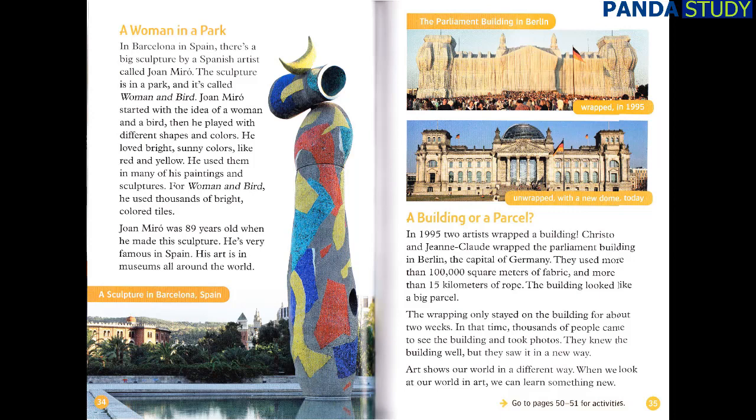In Barcelona, in Spain, there's a big sculpture by a Spanish artist called Jean Miro. The sculpture is in a park, and it's called Woman and Bird. Jean Miro started with the idea of a woman and a bird, then played with different shapes and colours. He loved bright sunny colours like red and yellow, and used them in many of his paintings and sculptures. For Woman and Bird, he used thousands of bright coloured tiles. Jean Miro was 89 years old when he made this sculpture. He's very famous in Spain, and his art is in museums all around the world.